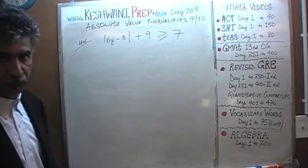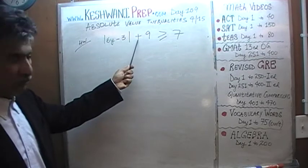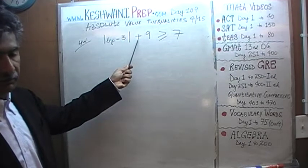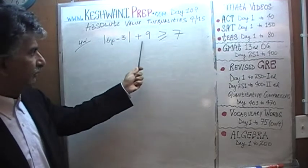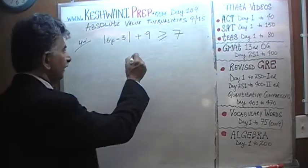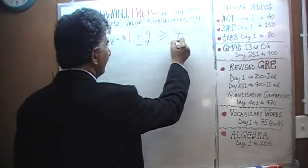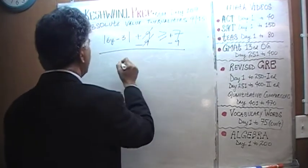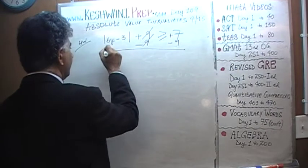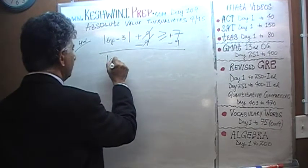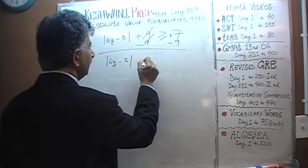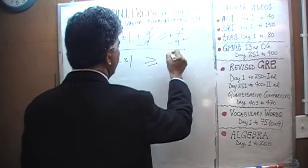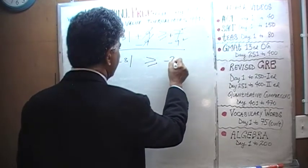We have to solve for Y. The very first thing we need to do is get rid of this 9 from the left-hand side by subtracting 9 from both sides. The 9 drops out, and now what we find is that the absolute value of 6Y minus 3 has to be greater than or equal to positive 7 and negative 9, which is negative 2.